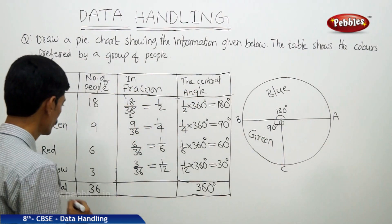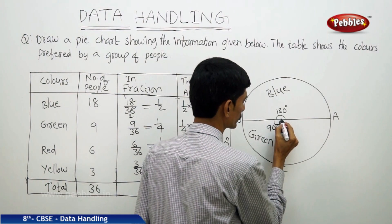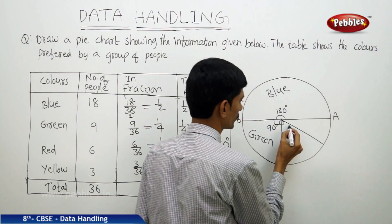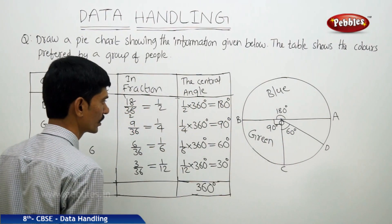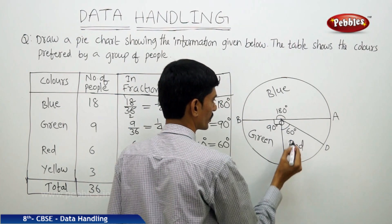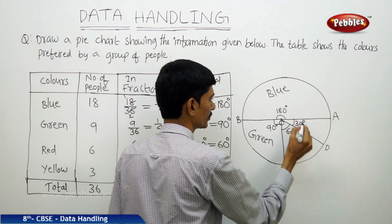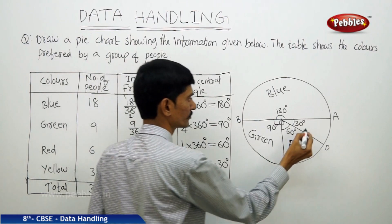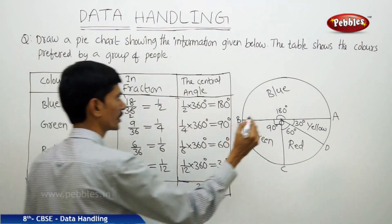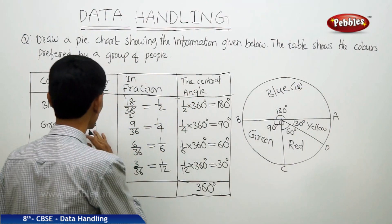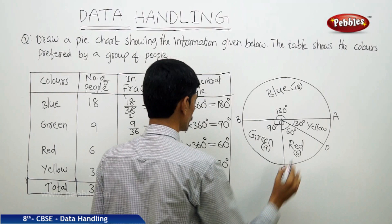The next sector is red color, preferred by 6 people, with a central angle of 60 degrees. Automatically, the remaining sector makes 30 degrees at the center and is represented by yellow color, preferred by 3 people. In this way, the circle is divided into different sectors showing blue (18), green (9), red (6), and yellow (3).